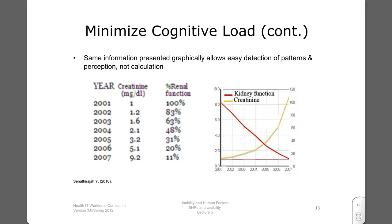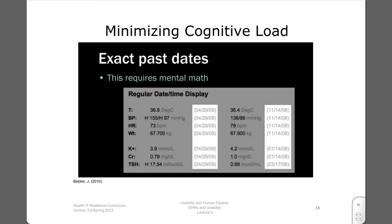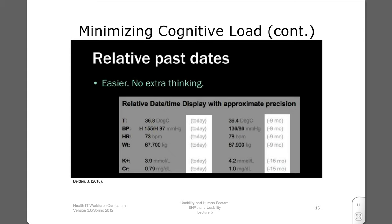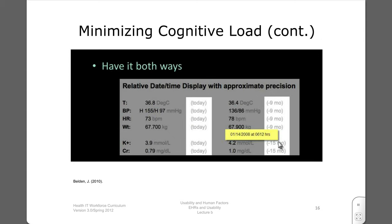On the left is a table showing the patient's creatinine values and renal function over several years. On the right, the same values are graphed, allowing one to see patterns at a glance. Obtaining values such as these requires the user to do calculations to find the time elapsed since the measurement. This relieves the user of calculation, with approximate useful values. The user can mouse over to get exact dates if required.